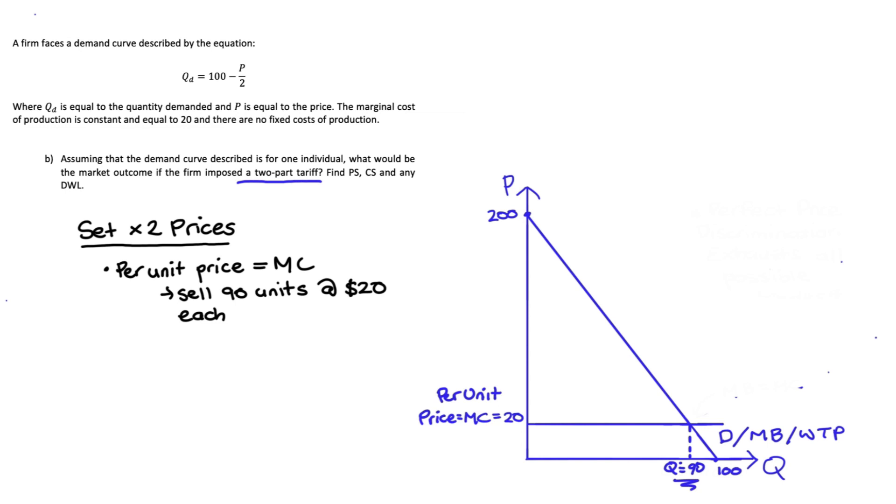But the firm is also going to charge the customer a fixed fee, and that fixed fee will be equal to the amount of consumer surplus that the consumer could have gotten if there was no fixed fee. So sometimes this is described as the consumer surplus that would have occurred in perfect competition.